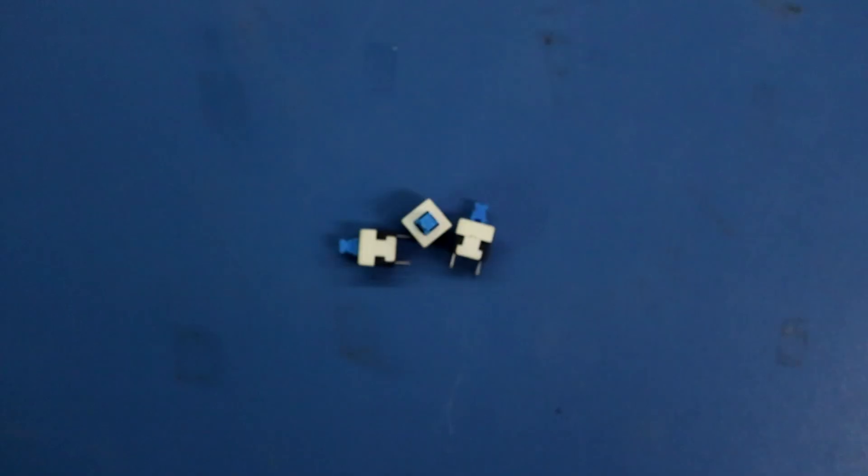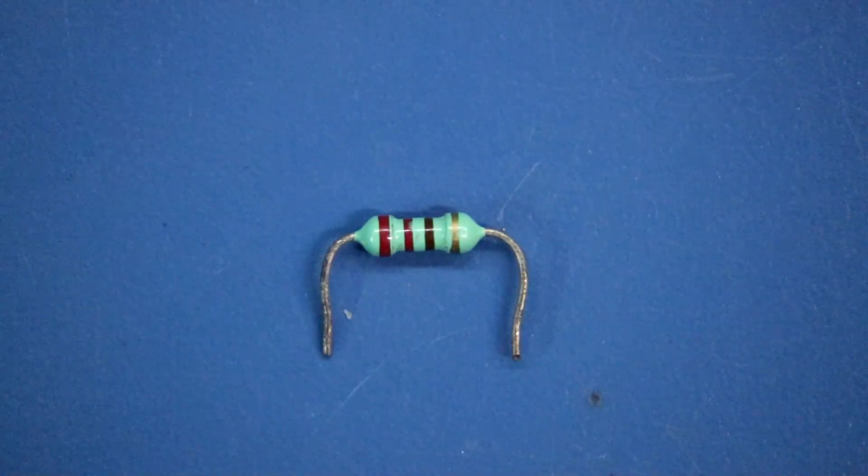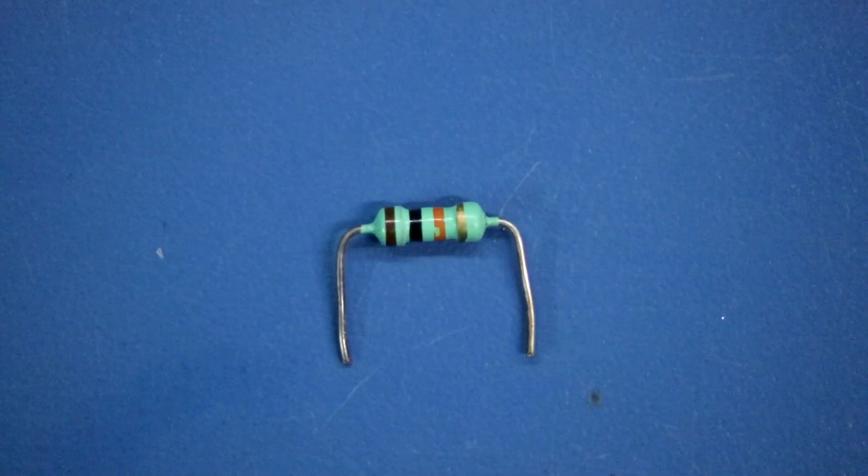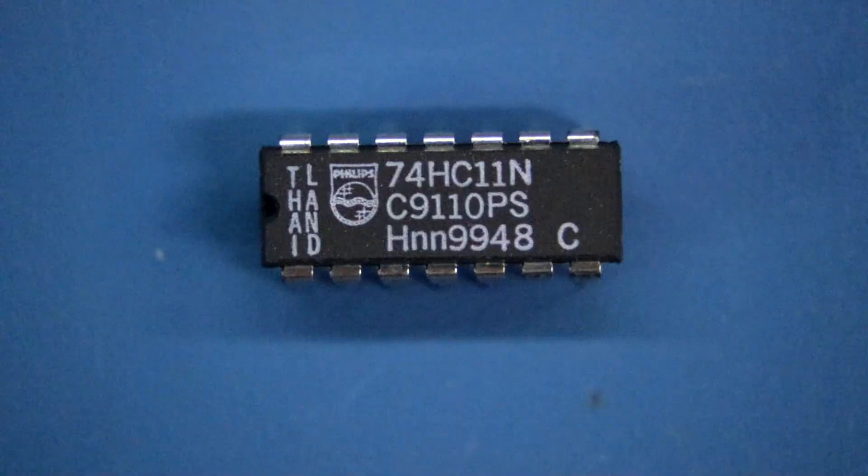For the switch, I will use this kind of switch. 220 ohm resistor, 10 kilo ohm resistor, green and blue LEDs, and this is the IC 7411.